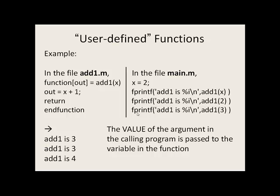We come to our last fprintf statement, and we say add1 is, that will be printed on the screen, percent i, so let's see what's on the right side, add1 of 3. So the value of 3 is passed to x here. 3 plus 1 is 4, gets stored in the output variable. We come to the end of the function, so this value will be put in place of add1. So the value of 4 will now be printed on the screen.